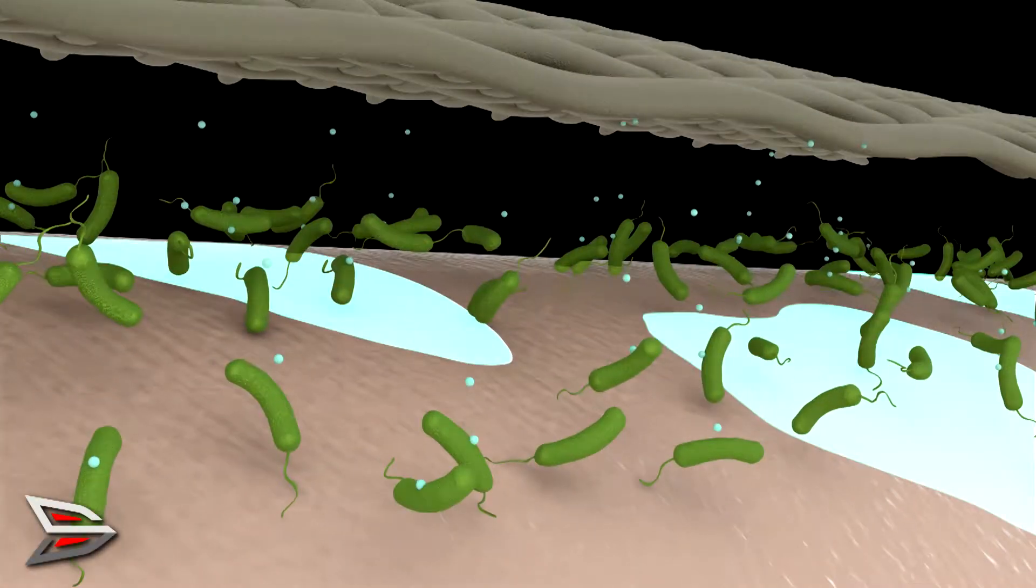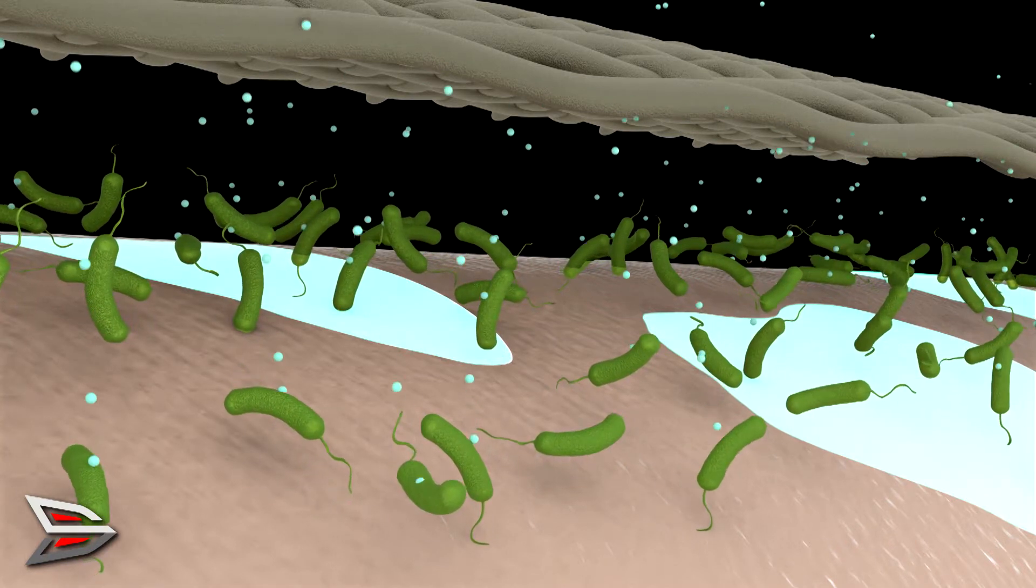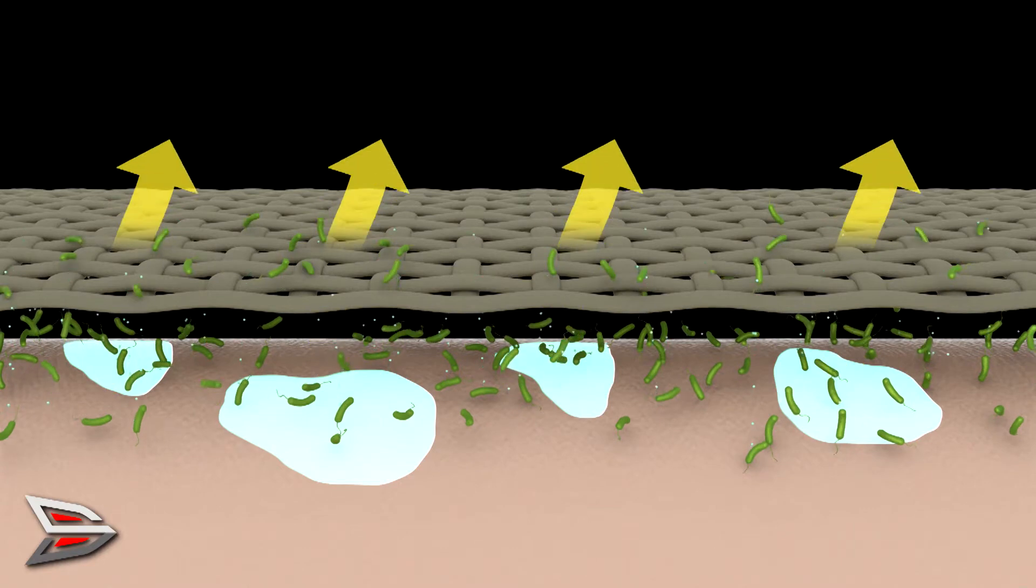When you sweat, bacteria on the skin consumes the nutrients in sweat and breaks them down into smaller molecules that evaporate and give off odor as a byproduct.